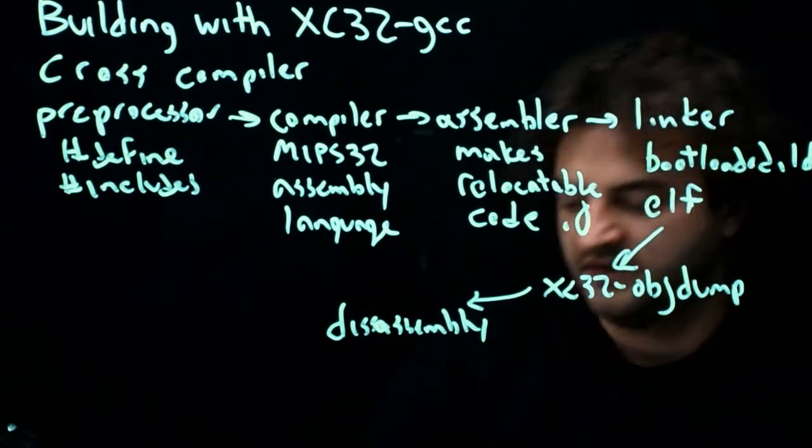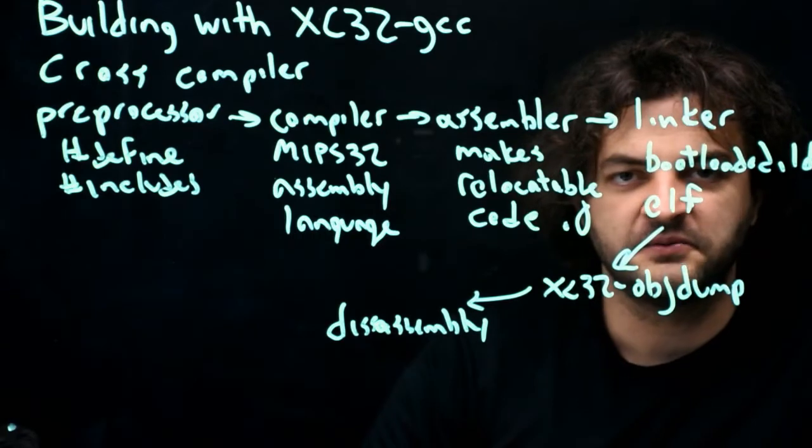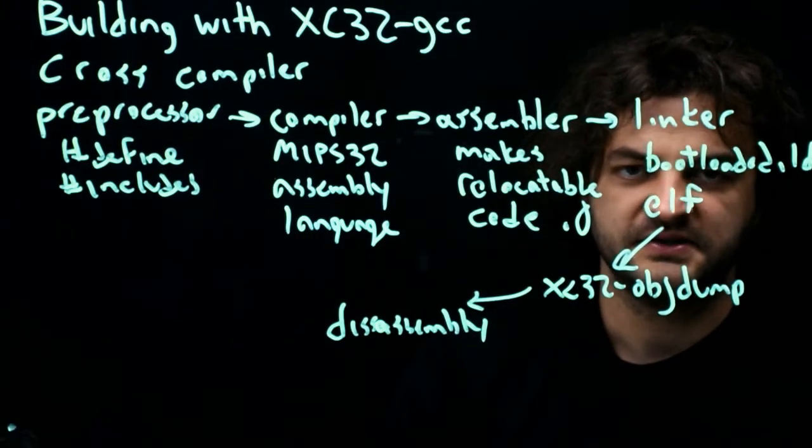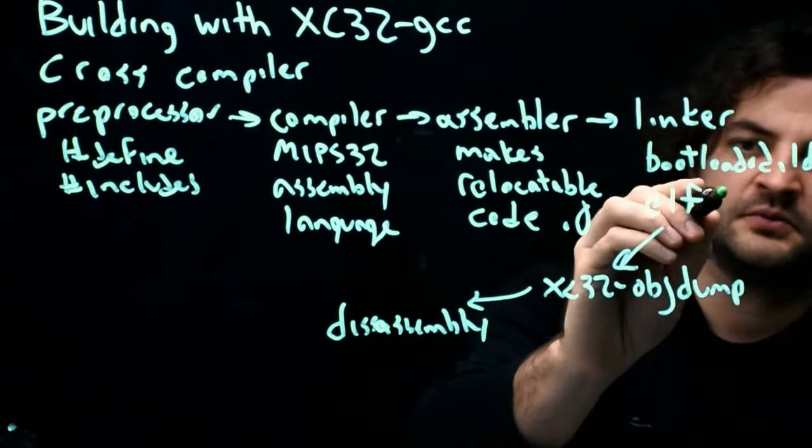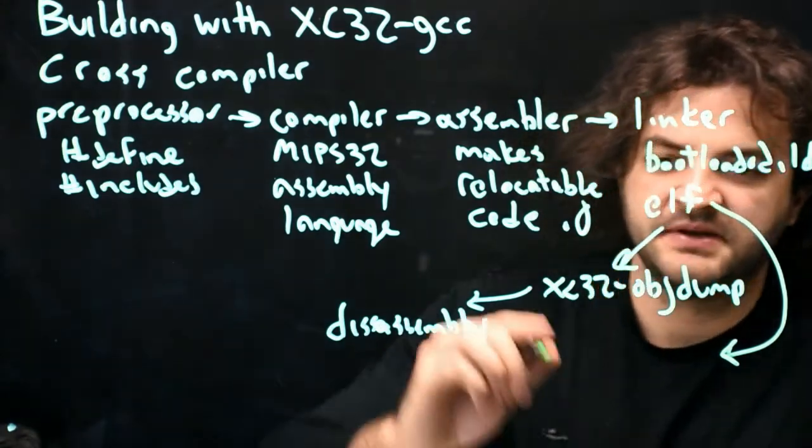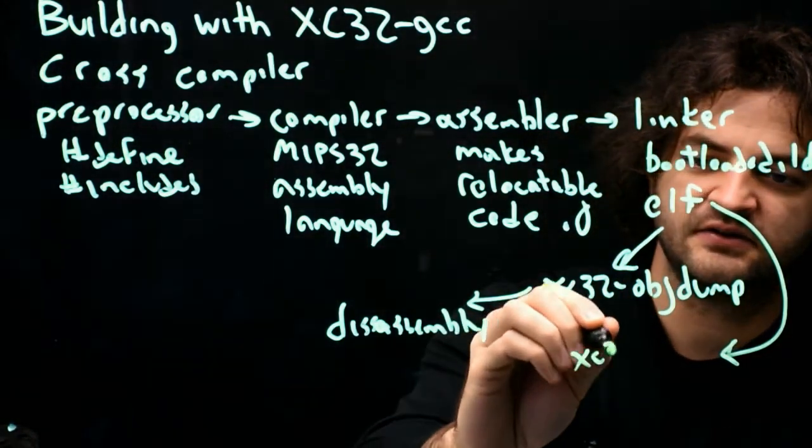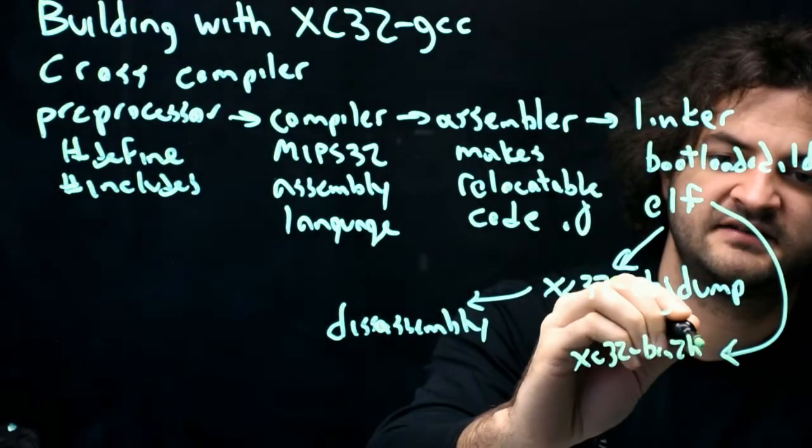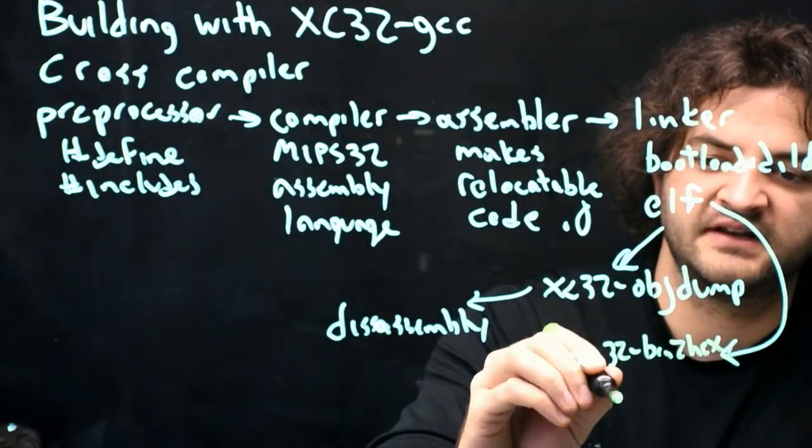The ELF file is not the thing that we want in the end, though, because it's so big it contains all of the memory in the PIC and what it should be. And a lot of those would be zero. So we'll take the ELF file, and this is a special step, and we'll send it to xc32-bin2-hex. And the output of this is a .hex file.